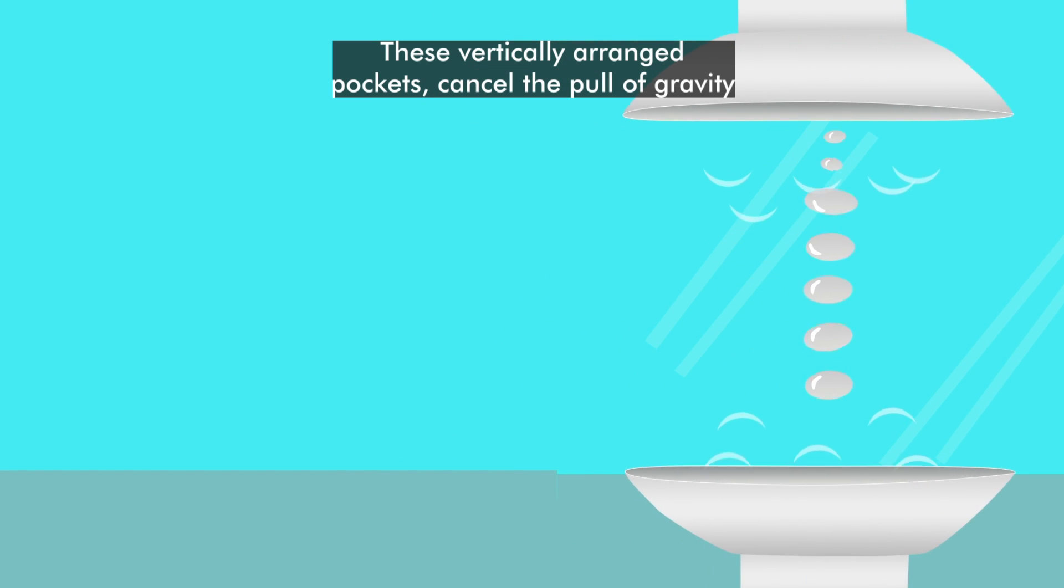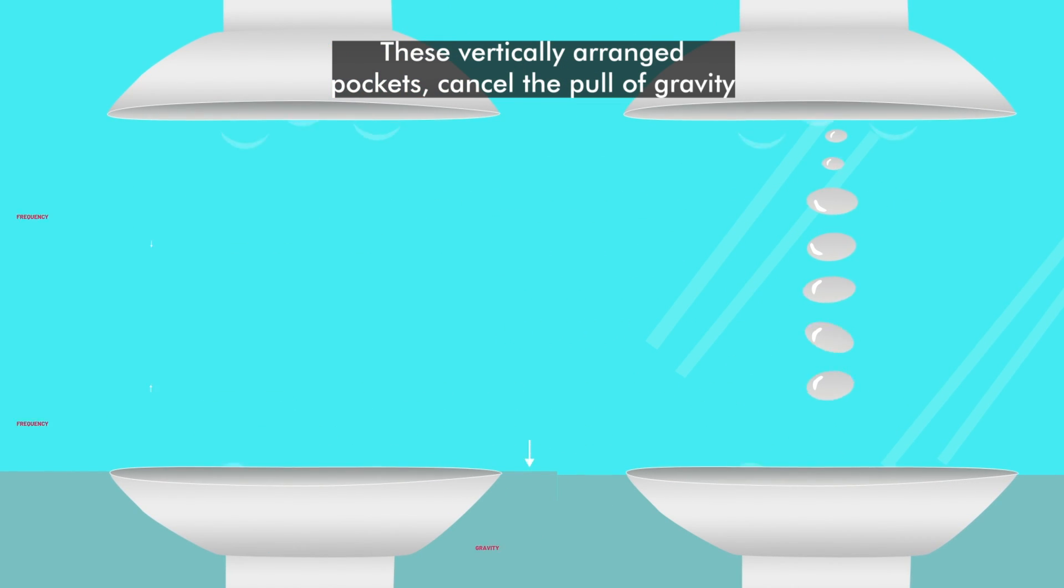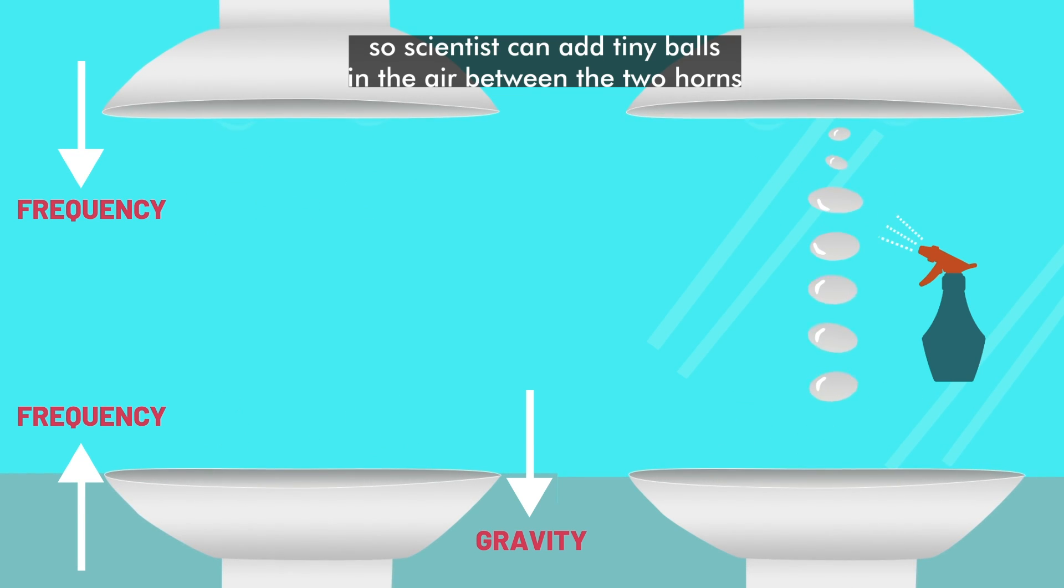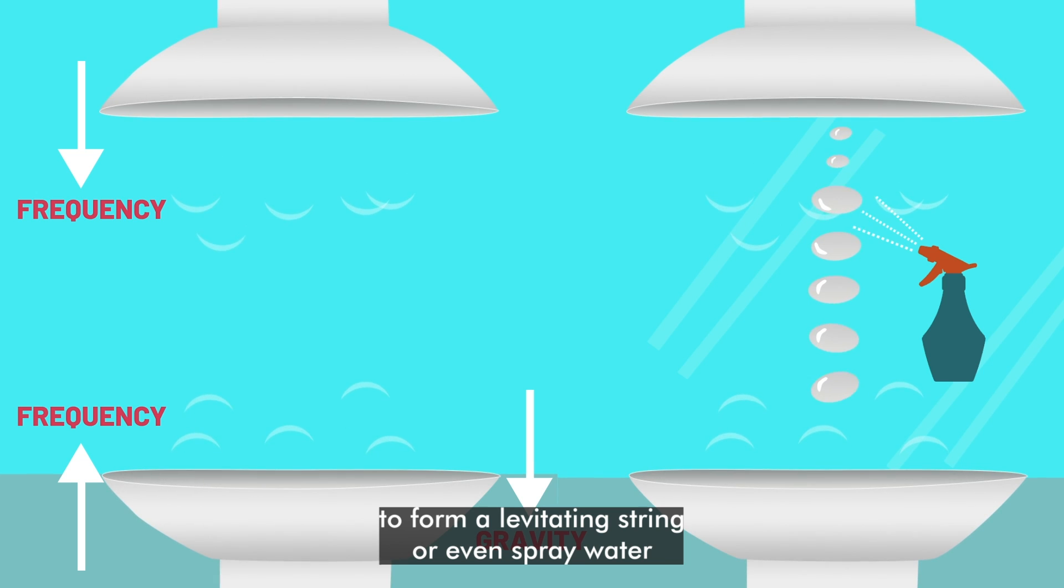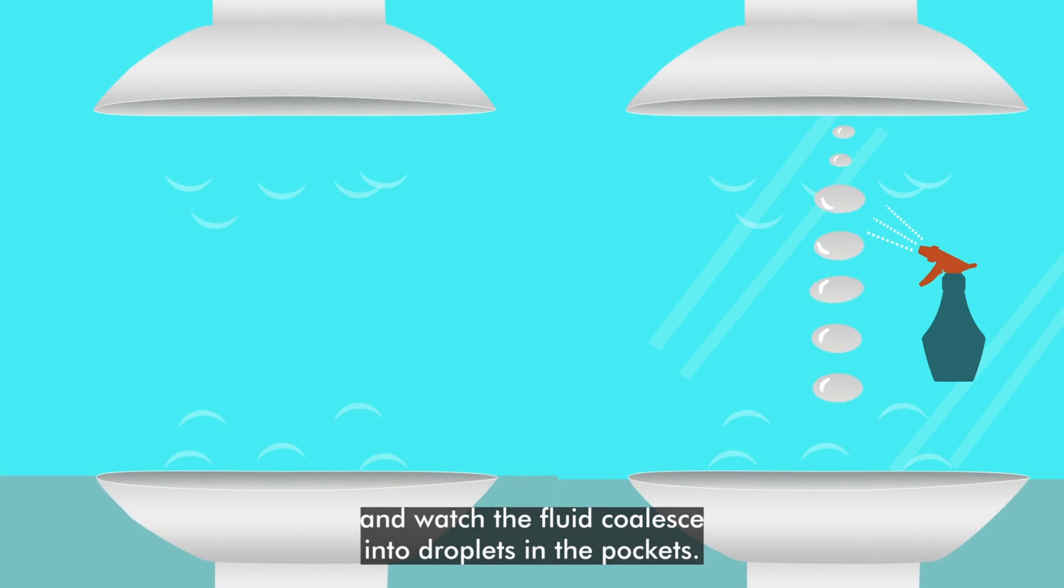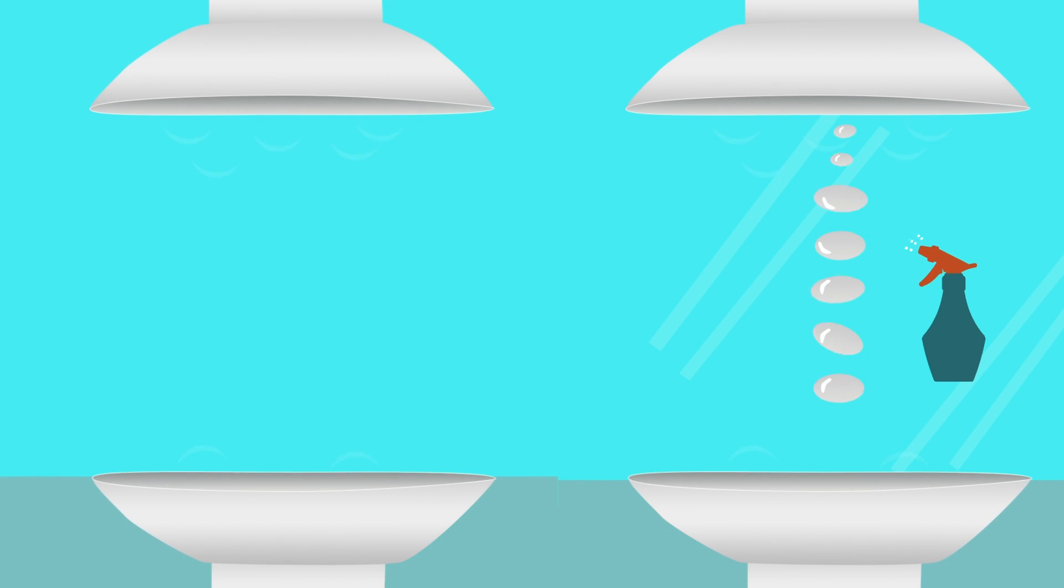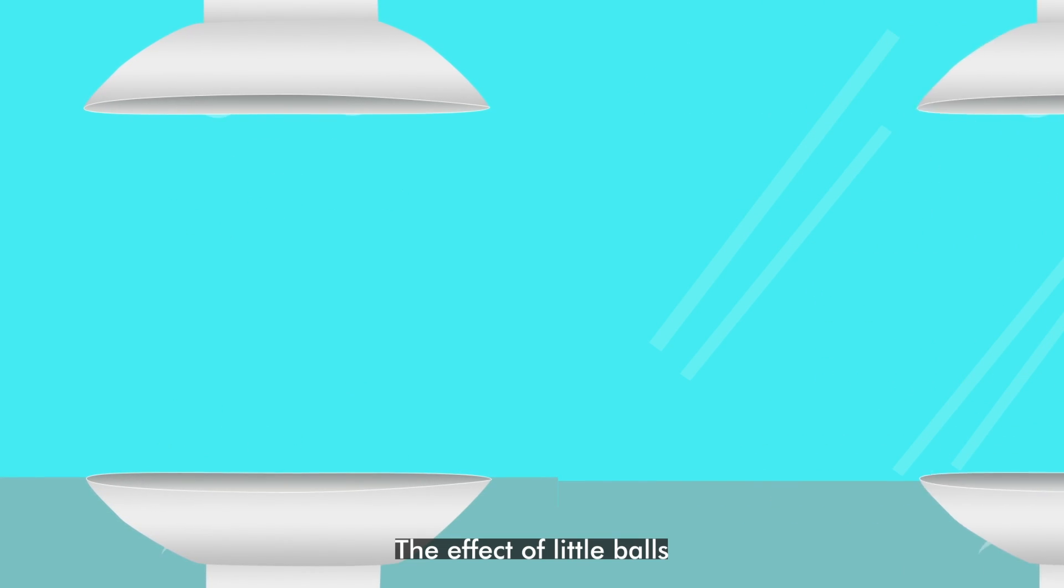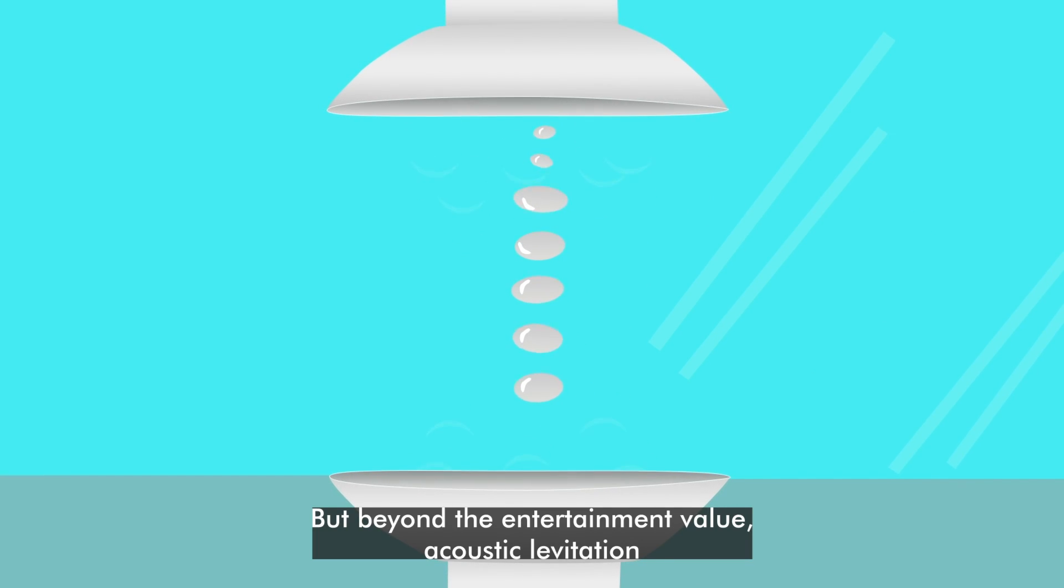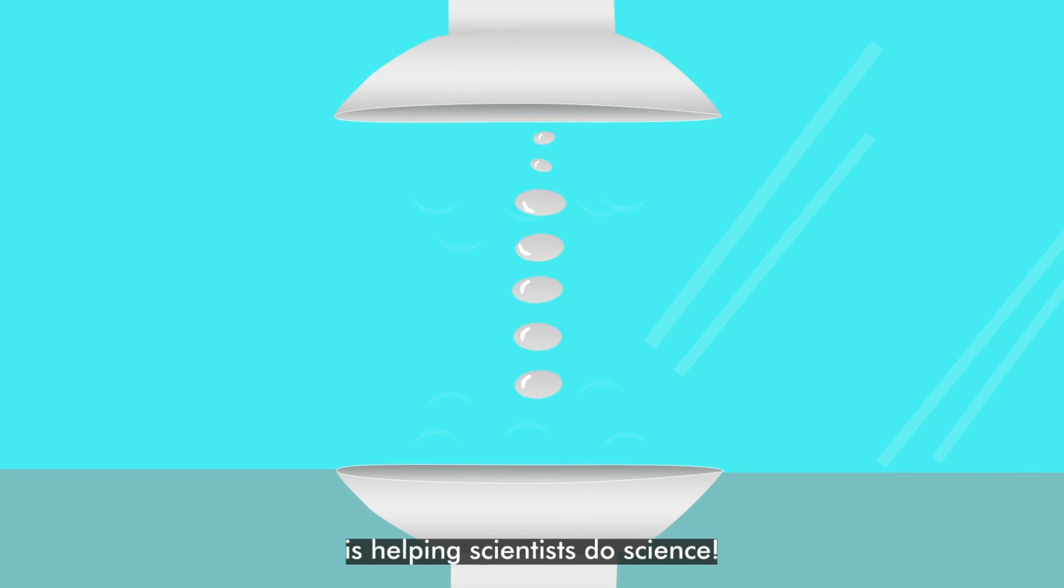These vertically arranged pockets cancel the pull of gravity. Scientists can add tiny balls in the air between the two horns to form a levitating string or even spray water and watch the fluid coalesce into droplets in the pockets. The effect of little balls hovering and vibrating in mid-air is mesmerizing, but beyond the entertainment value, acoustic levitation is helping scientists do science.